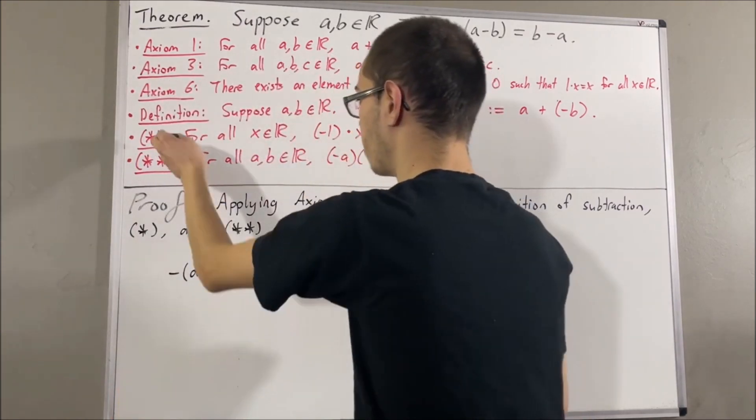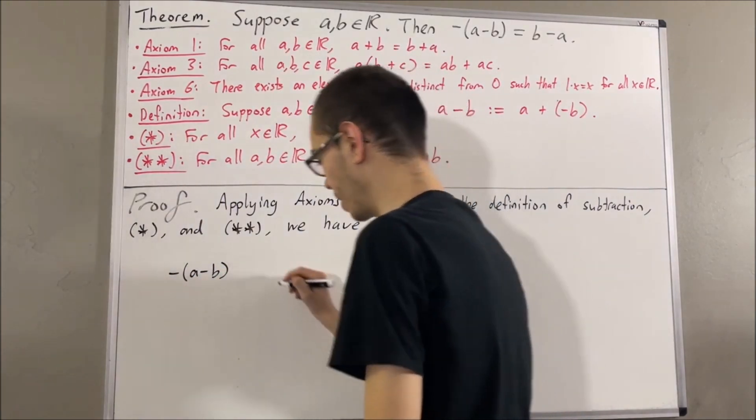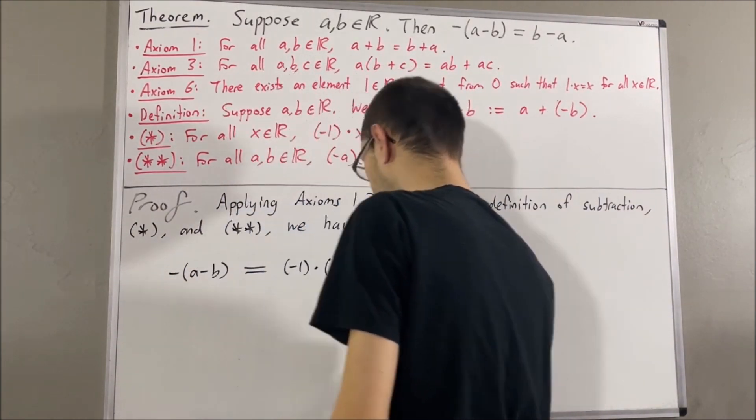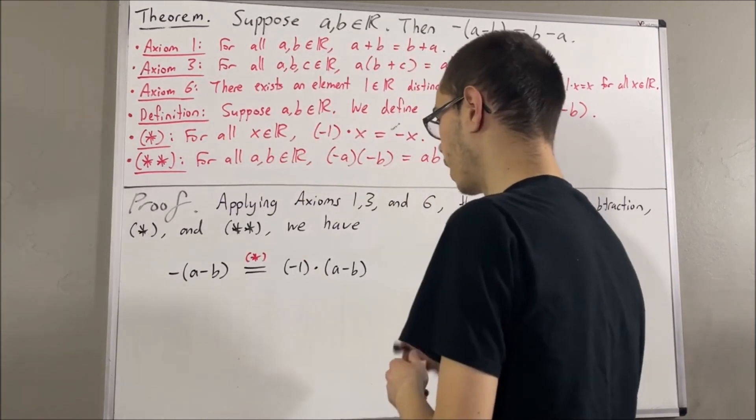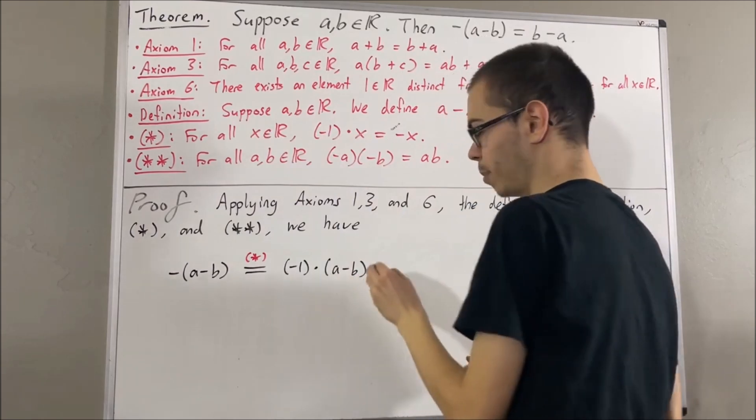First, by star, negative of a minus b is equal to negative 1 times a minus b. And then, by definition of subtraction, a minus b is equal to a plus the negative of b.